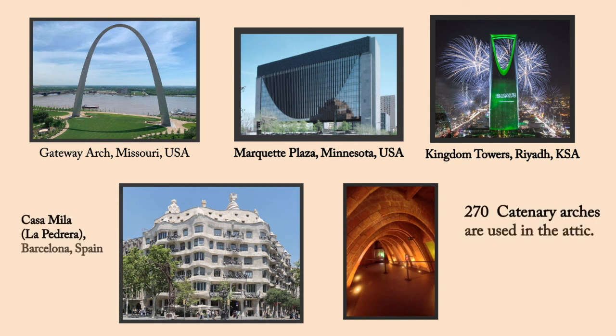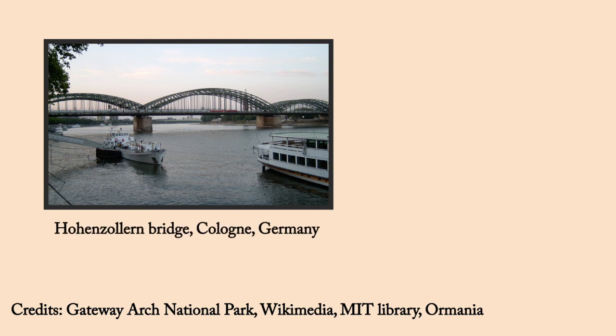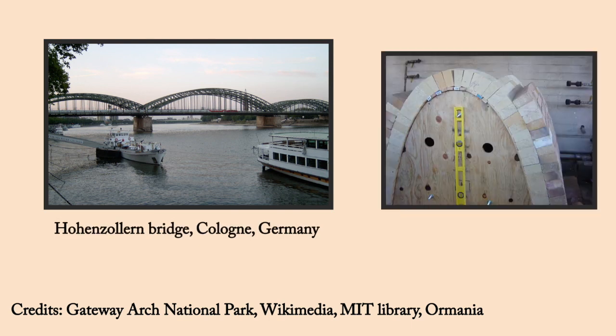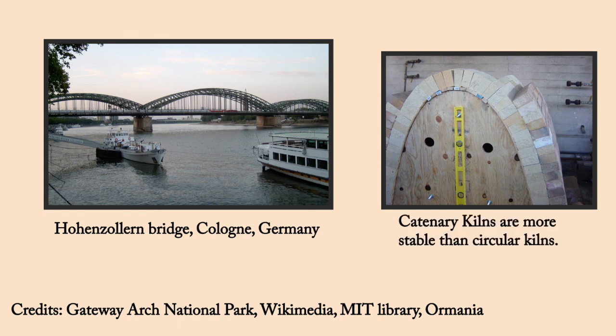270 supporting catenary arches are used in the attic of the iconic Casa Mila apartment to avoid adding weight to the building. The inverted arch can also be seen in other bridges such as the Hohenzollern bridge in Germany. Potters also use catenary kilns because of their stability. The integrity of the structure is threatened by temperature differences and circular kilns have this issue compared to catenary kilns.